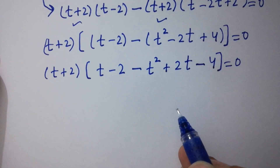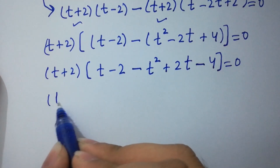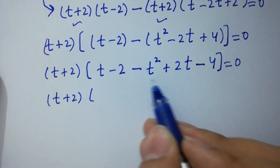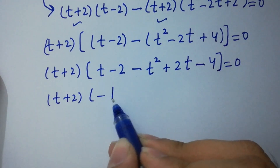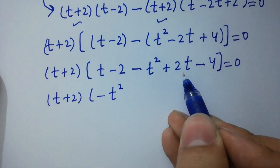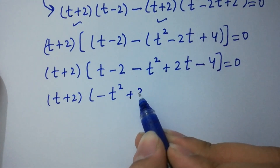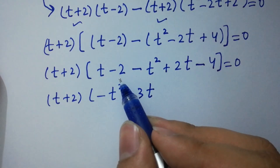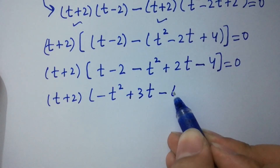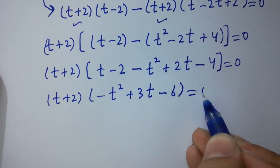So t plus 2, and here we have minus t squared. Combining: 2t plus t gives 3t, minus 2 minus 4 gives minus 6, equal to 0.